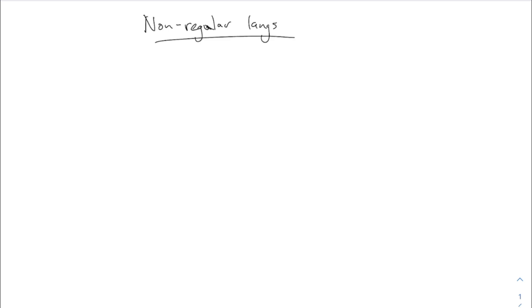Today I want to start talking about something completely different in the general theme of non-regular languages. We have one example so far that we've discussed of a non-regular language, and this is what we're going to be talking about for the next few times. The classic example is a^n b^n. This is not regular.